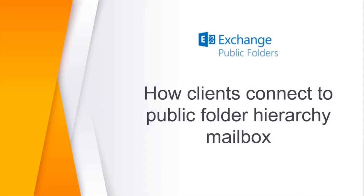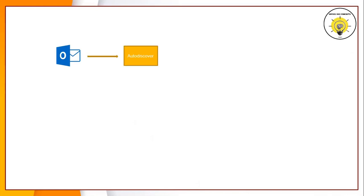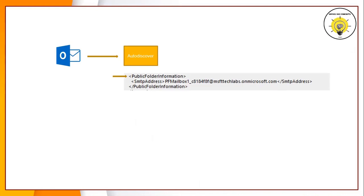Now let's understand how Outlook and OWA connect to public folder mailboxes. When a user opens the Outlook application, the Outlook client contacts the Autodiscover service to determine the connection settings for the user mailbox. The Autodiscover service calls a function called get public folder recipient to retrieve information about the public folder mailboxes. During the Autodiscover response, the client will check the public folder information element. I will show you practically how we can check public folder information. This element contains the SMTP address of the public folder mailbox.